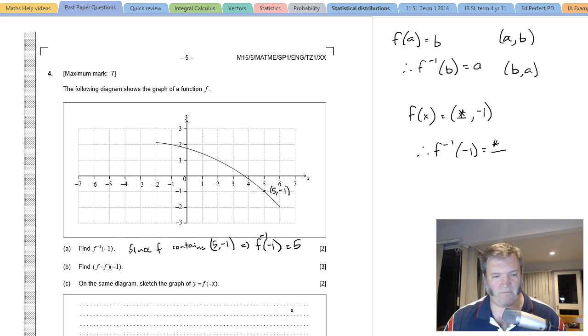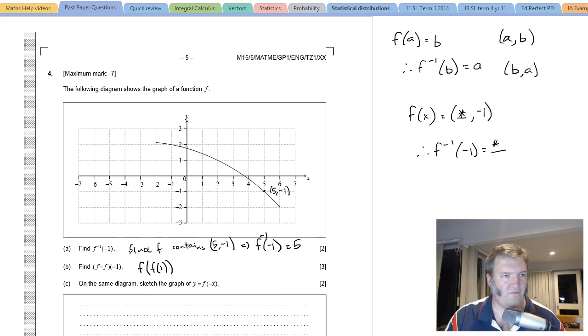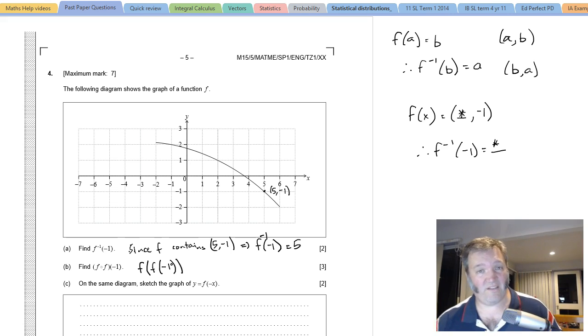Now find f of f of negative 1. So this is really f(f(-1)). Well, what is f of negative 1? I didn't leave myself enough room, I'm going to go back and draw that more nicely. We've got plenty of time, we're really well ahead of the recommended mark per minute.